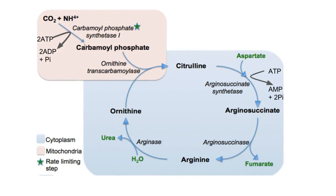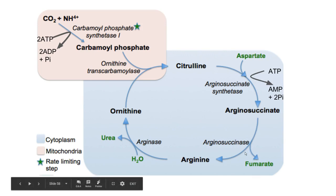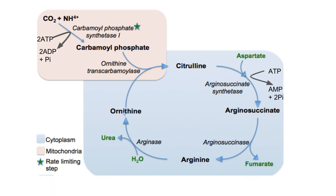To summarize diagrammatically: carbon dioxide and ammonium ions form carbamoyl phosphate, which is condensed with ornithine to form citrulline. Citrulline is condensed with aspartate to form arginosuccinate. Arginosuccinate is then cleaved into fumarate and arginine. Arginine is cleaved into ornithine and urea — the waste product released outside the body through the kidneys — and ornithine is reused in the urea cycle.